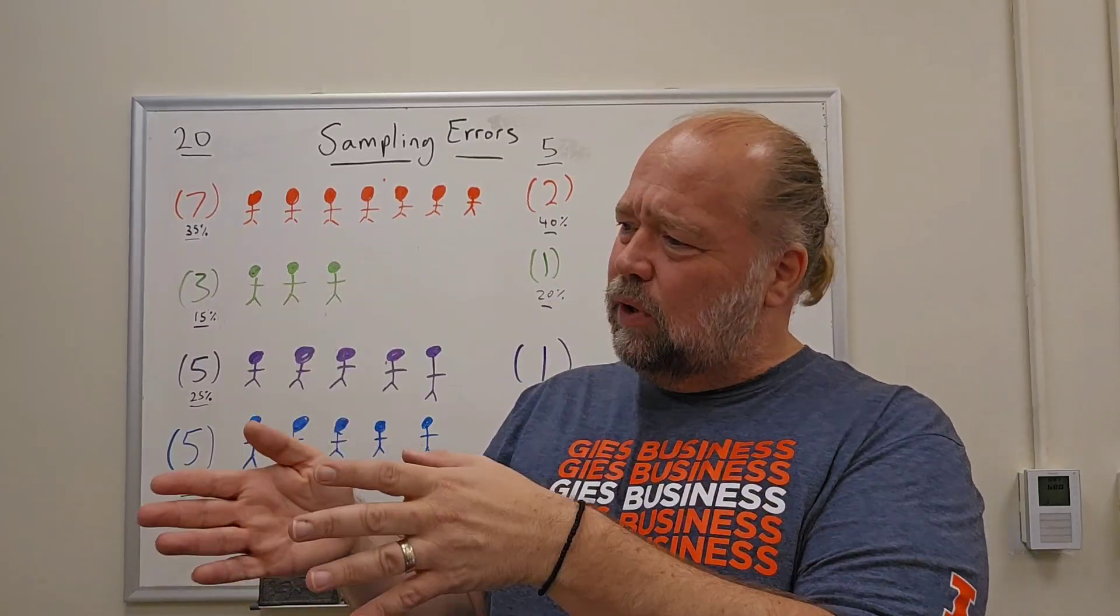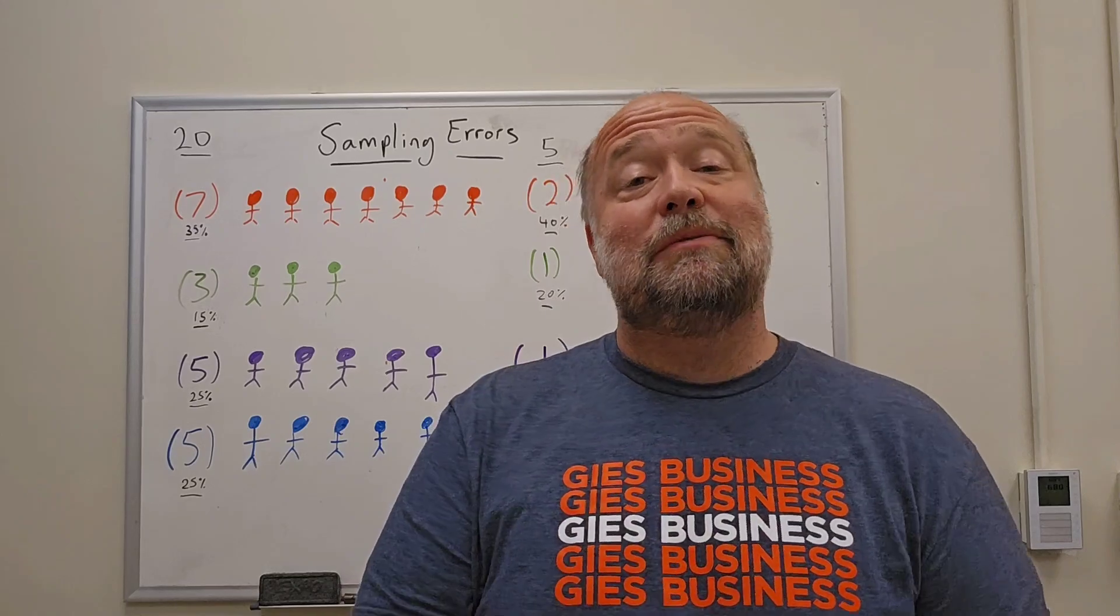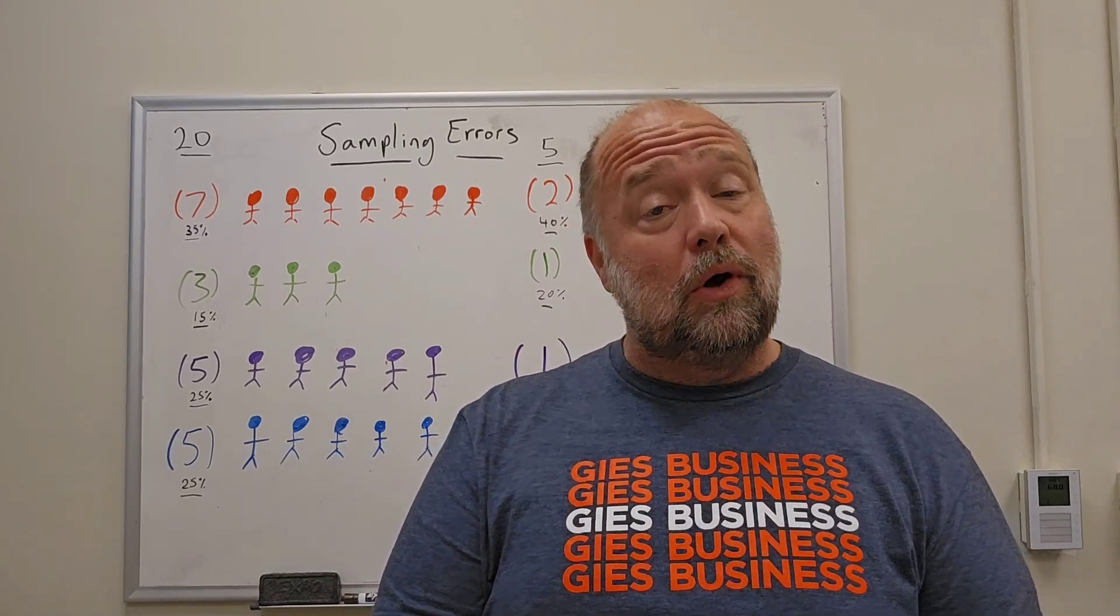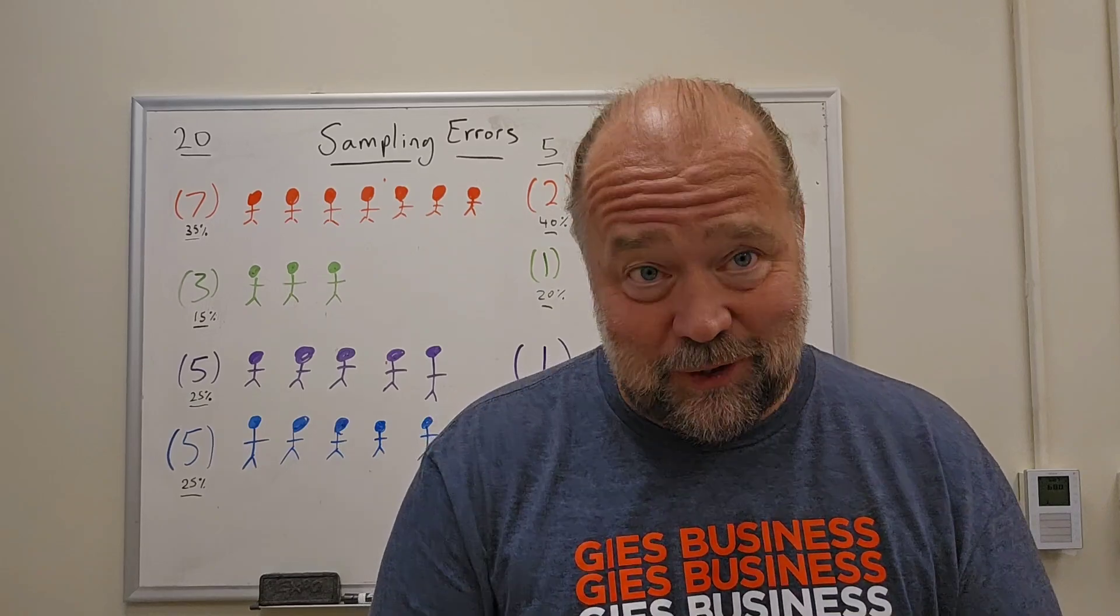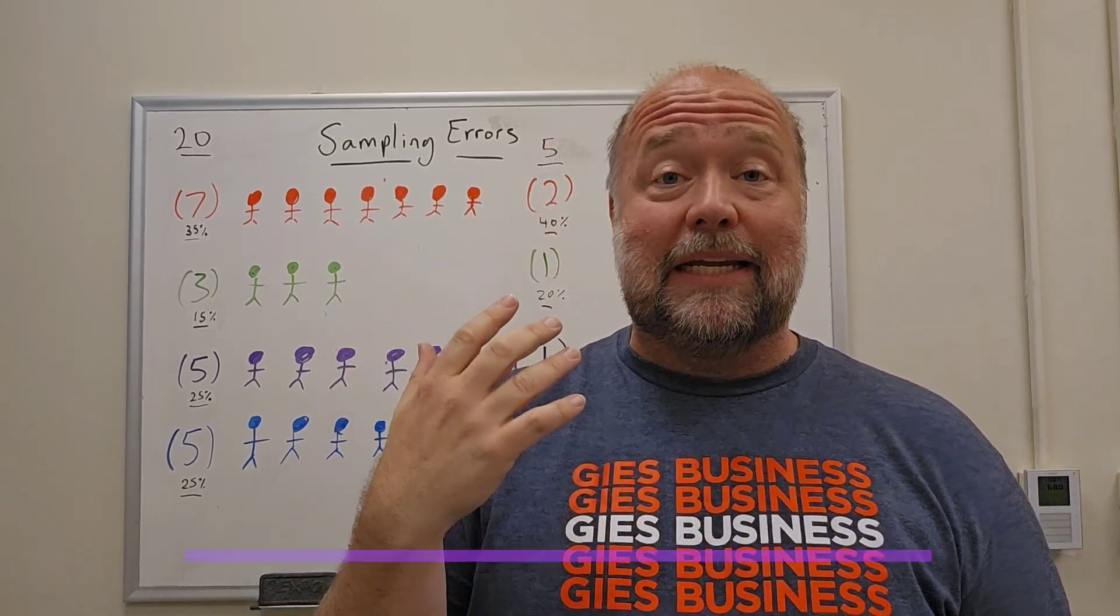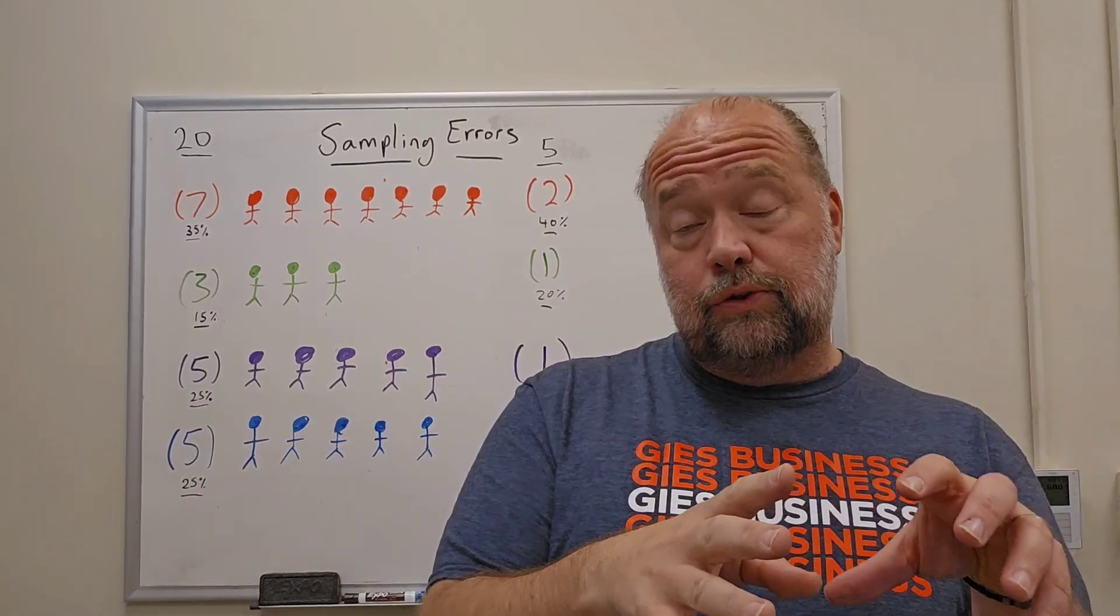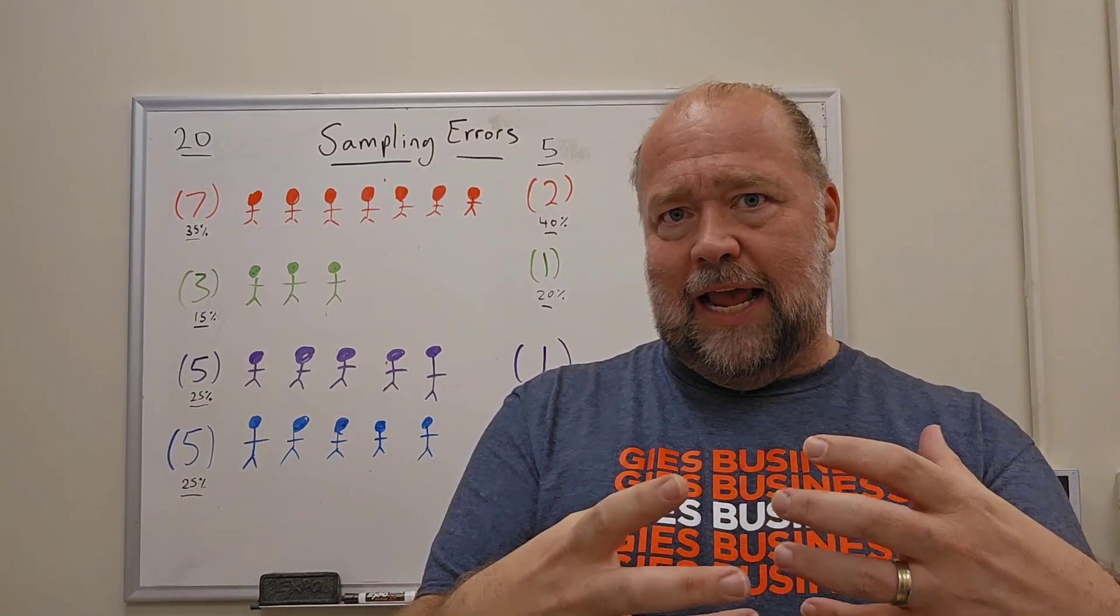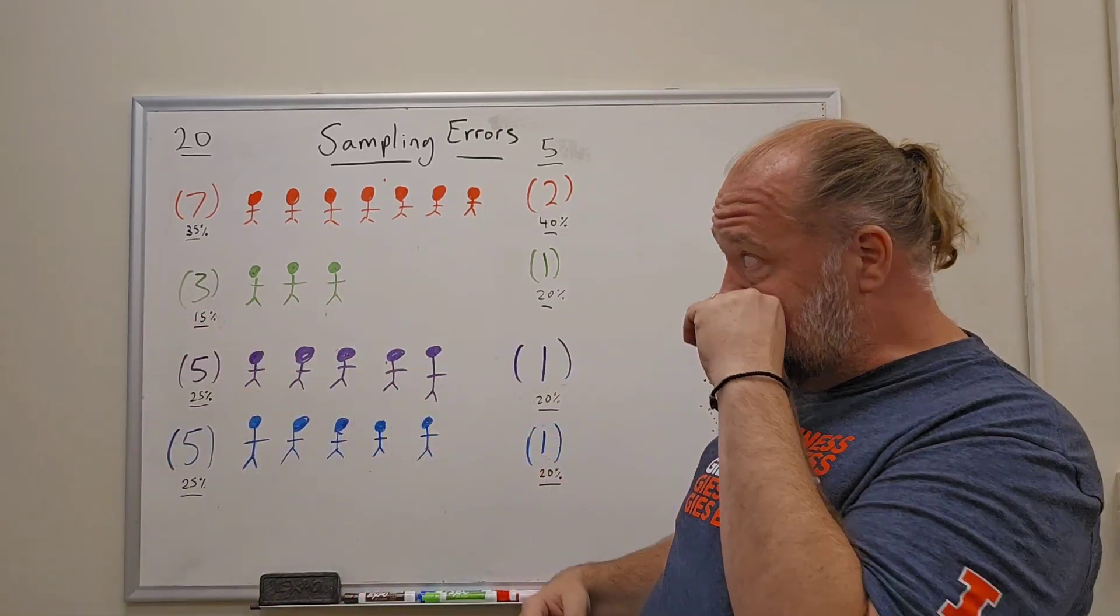So why is it that the election polls and the election results don't always match up? Well, I have some of the most common errors you're gonna see in polling to help you understand why those numbers sometimes don't always work. And the first thing you might see is what we call a sampling error. A sampling error is basically when the people you choose for your sample, like the people you're gonna ask, don't actually represent the whole population.